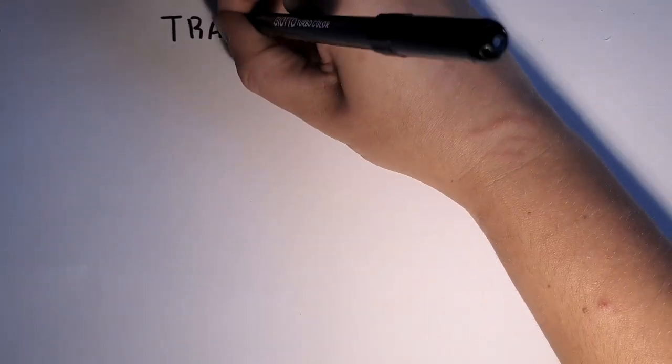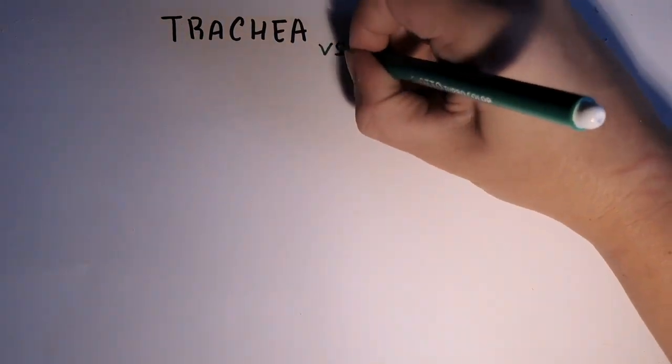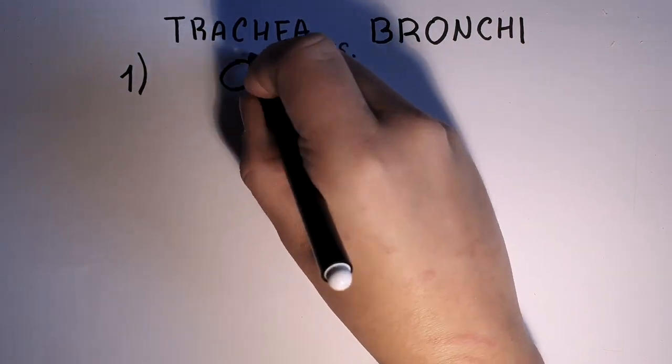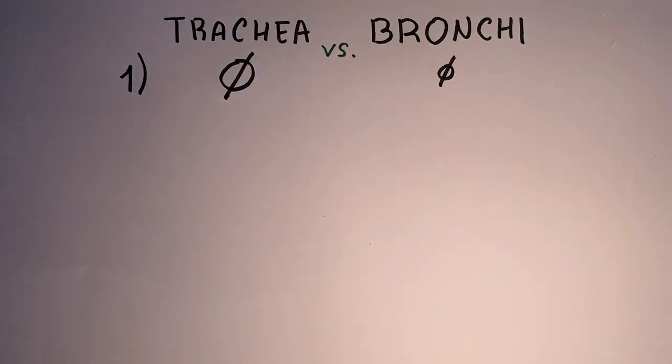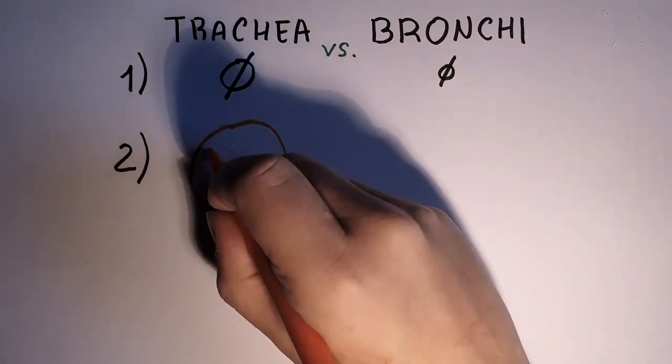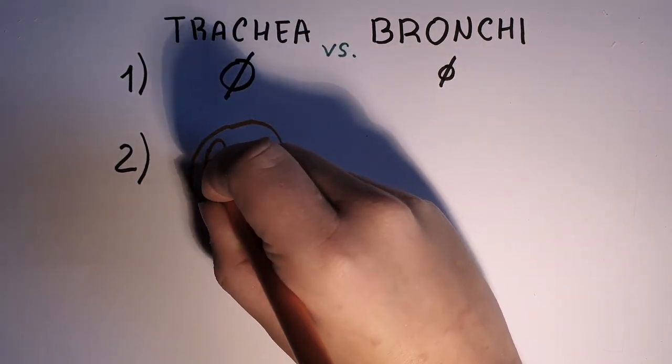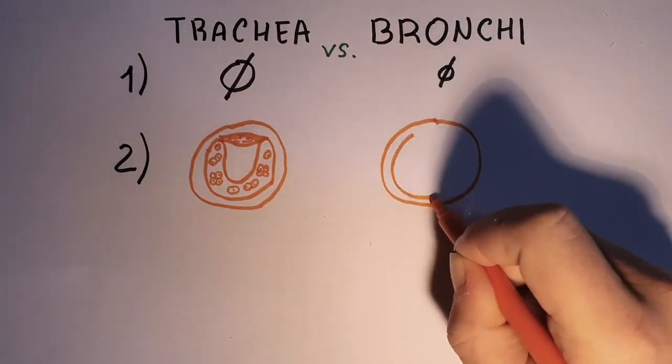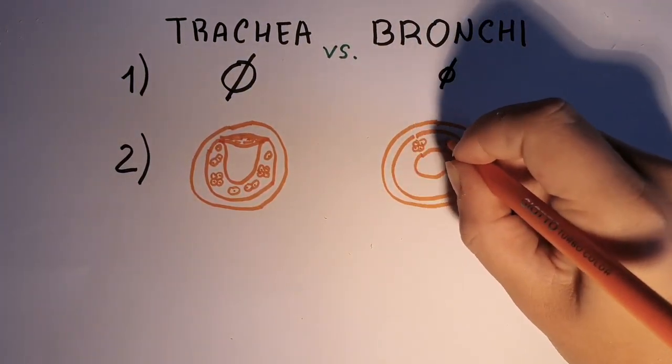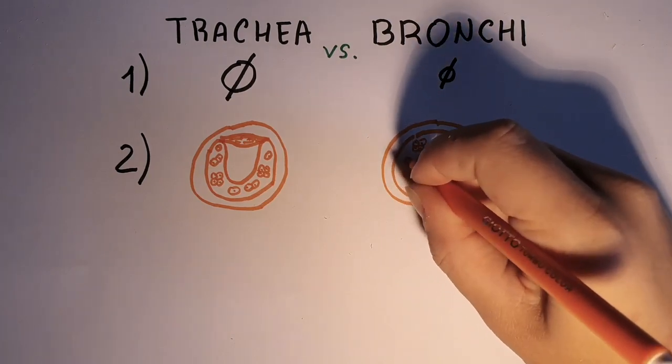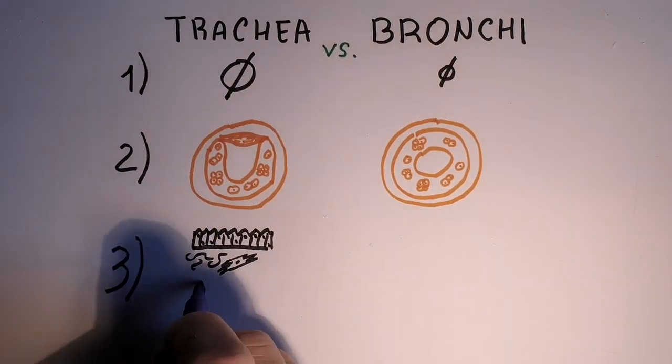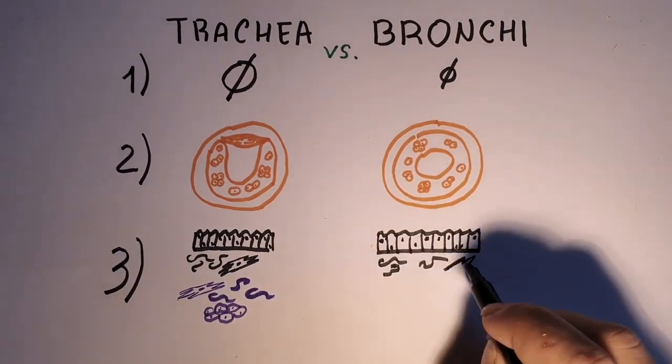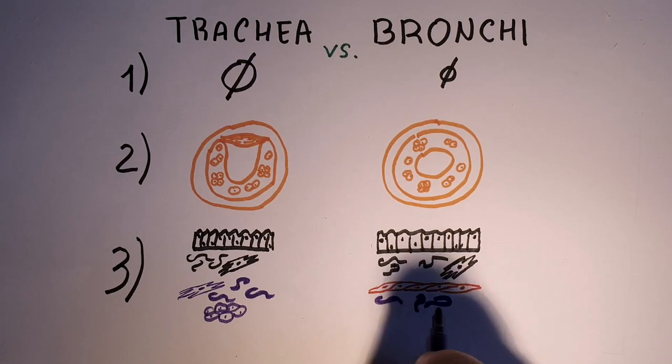The microanatomy of the bronchi is very similar to the trachea, although we can notice some important differences. First, the bronchi are smaller in diameter. Second, the cartilaginous layer completely encircles the lumen of the bronchi, and as they branch into lobar and segmental bronchi, the cartilage becomes more scattered and also thinner. Third, we can notice a thinner layer of smooth muscle between the lamina propria and the submucosa in order to give more elasticity to the overall structure.